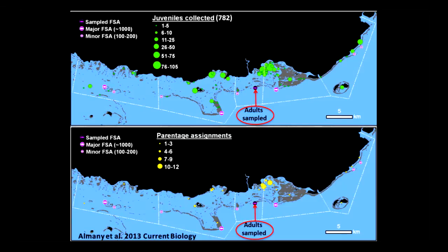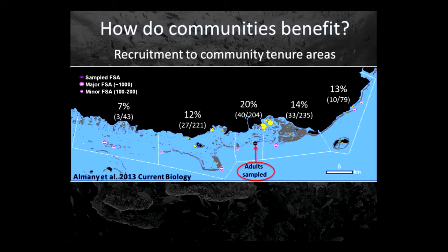We got about 782 juveniles, then ran some parentage analysis. The yellow ones are juveniles we could actually assign back to adults from the aggregation we sampled. You can see there's dispersal of larvae from that managed aggregation site throughout the entire coastal area. The five community marine tenure areas are connected to each other by dispersal. Breaking down the numbers by proportion of recruitment in each community tenure area: the community that owns and manages that site gets about 20% of their juvenile coral trout from their managed aggregation. Adjacent communities get 12% to 14%, and others get 13% and 7%.